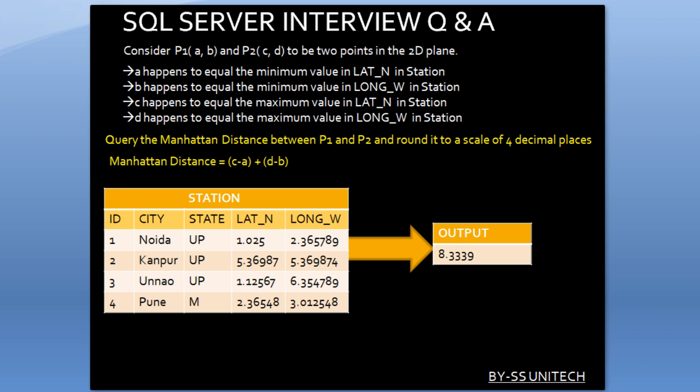How can we calculate the Manhattan distance? We have to calculate (C minus A) plus (D minus B). Here, A is the minimum value of latitude, B is the minimum value of longitude, C is the maximum value of latitude, and D is the maximum value of longitude. So we use: maximum latitude minus minimum latitude, plus maximum longitude minus minimum longitude.